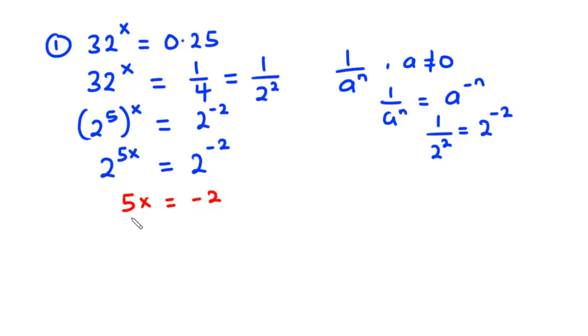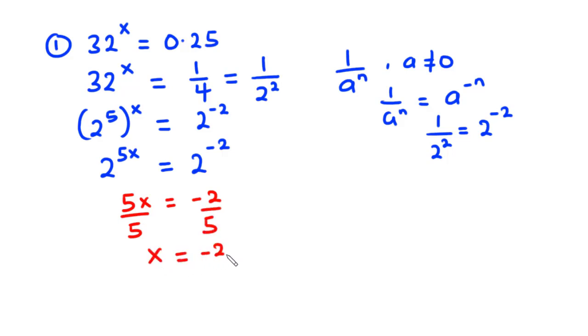Now let's divide both sides of the equation by 5. And then we have x to be equal to negative 2 over 5. So this is the value of x.